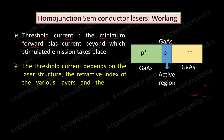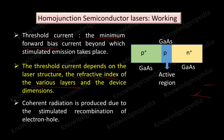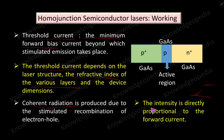The threshold current depends on the laser structure, the refractive index of the various layers, and the device dimensions such as length and breadth. Coherent radiation is produced due to stimulated recombination of electron-hole pairs. After the threshold current is exceeded, stimulated emission takes place, producing coherent radiation. As the current increases further, more radiation is produced and the intensity increases — intensity is directly proportional to the forward bias current.